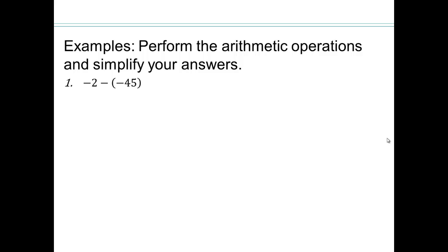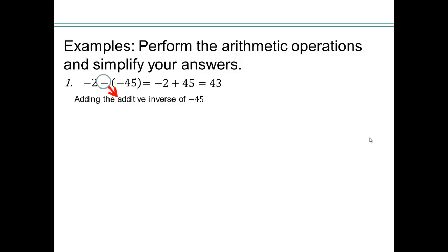Let's see if you can compute some of these subtractions. Negative 2 minus negative 45 — that's like adding the additive inverse of negative 45, which is 45. So this subtraction problem turned into negative 2 plus 45, which is 43.